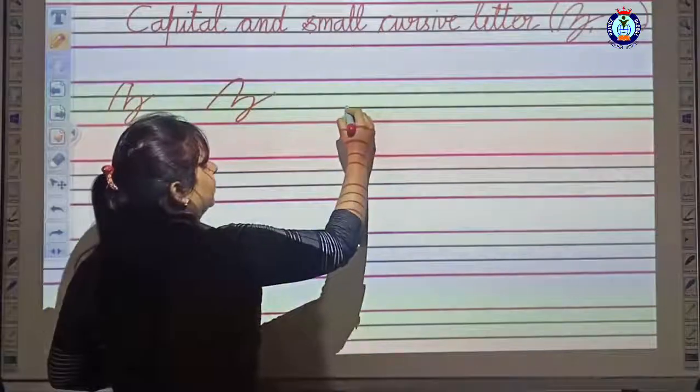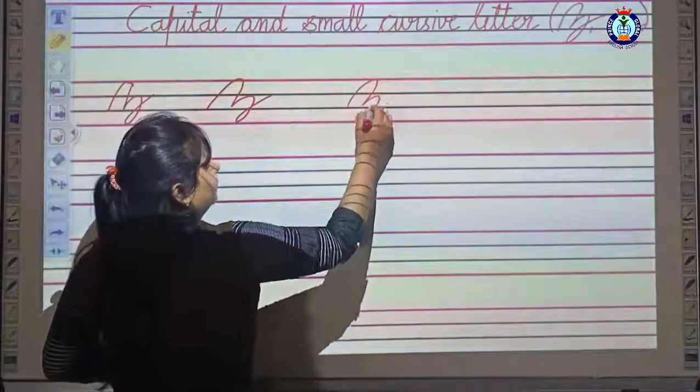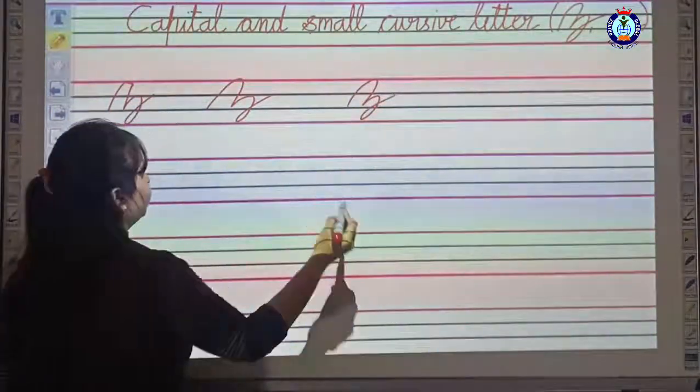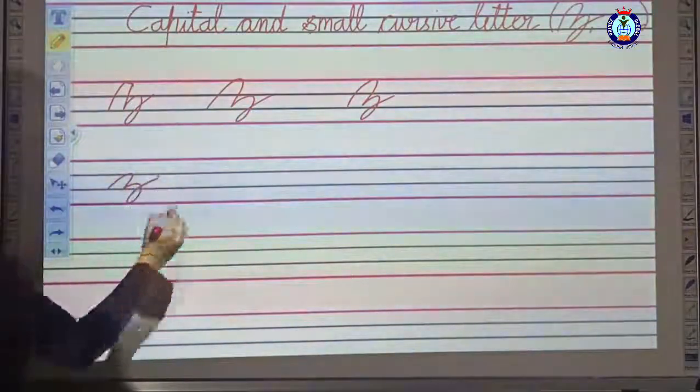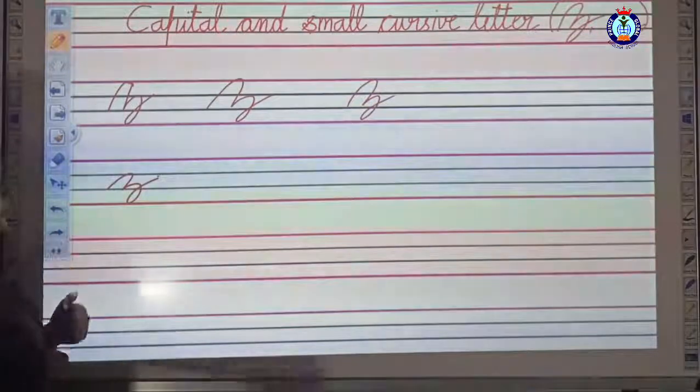Capital letter Z. Small letter, three lines mee banye ga. This is small letter Z.